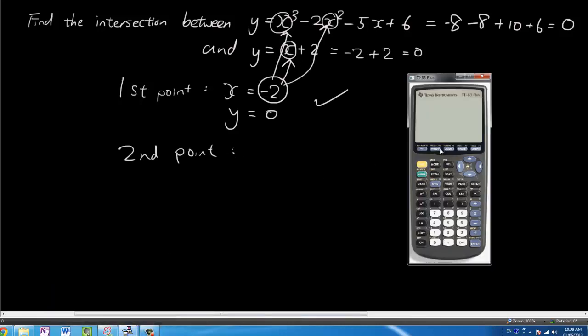So back in our calculator, you're going to go to second, trace, and then go down to intersect. And this time you're going to go to approximately where the second point of intersection is by pressing the left and right arrow keys. So I can see the lines intersect around about here. So I'm going to press enter here three times. And the answer is 0.5857 or 5858.